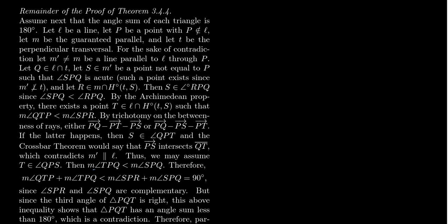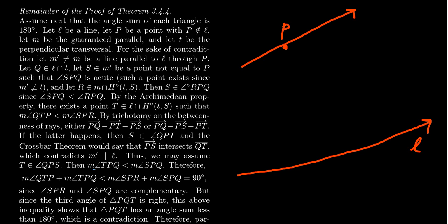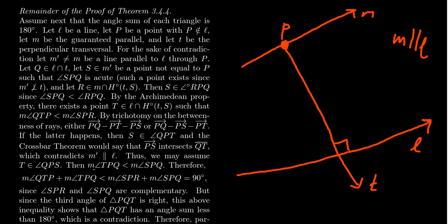Whenever you're trying to prove the Euclidean Parallel Postulate, always start with a line L and take a point P that's not on that line. We want to show there's a unique parallel line through P parallel to L. We have the guaranteed parallel line M. Let M be that guaranteed parallel line, so L and M are parallel to each other. Also let line T be the guaranteed perpendicular transversal to L and M.